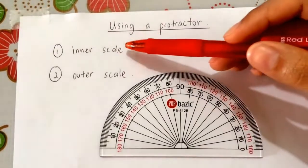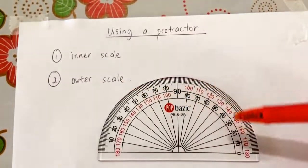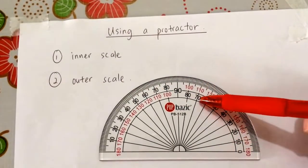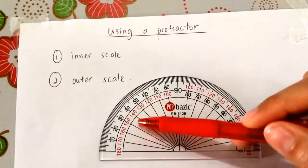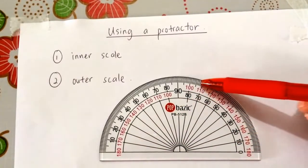Your protractor has two scales, the inner scale and the outer scale. This is the inner scale, the numbers on the inside. And this is the outer scale, the numbers on the outside.